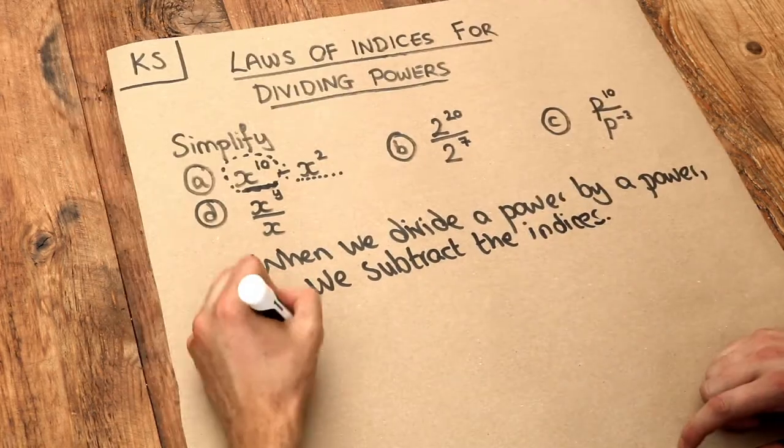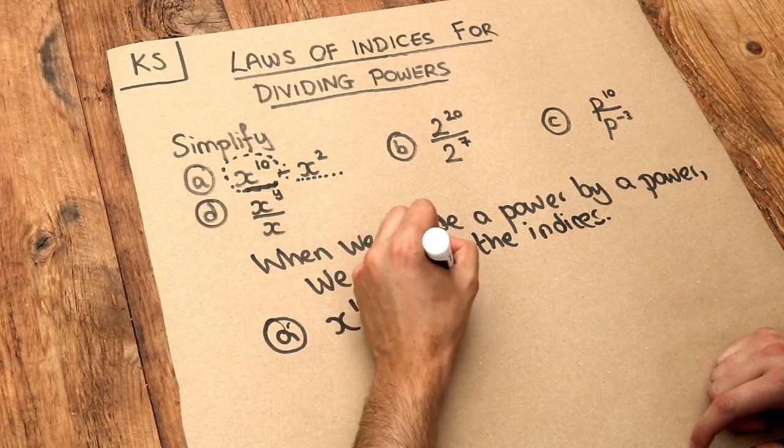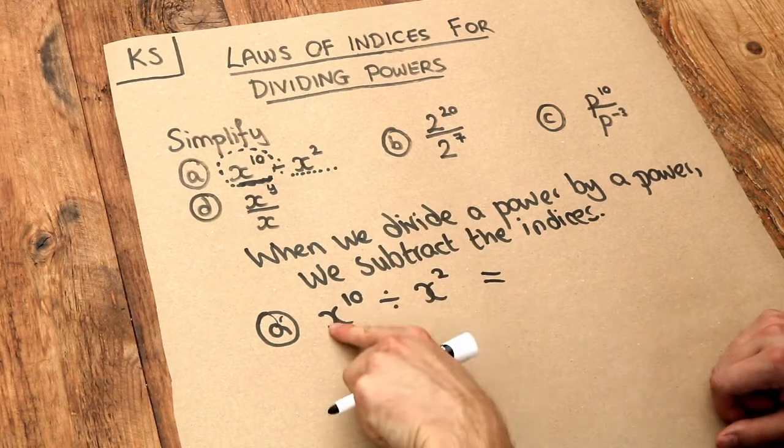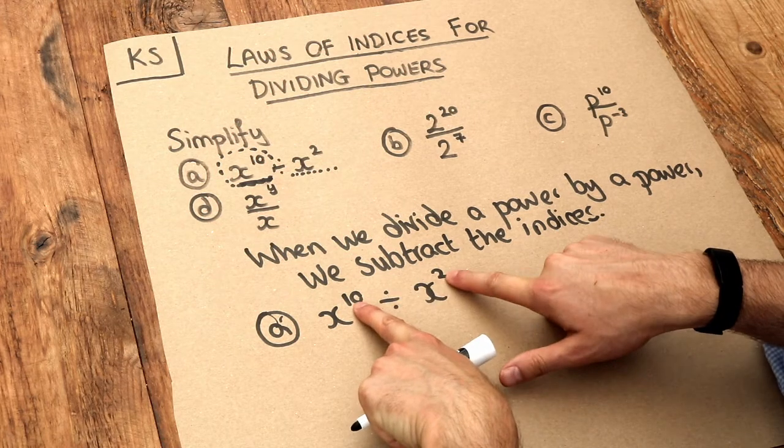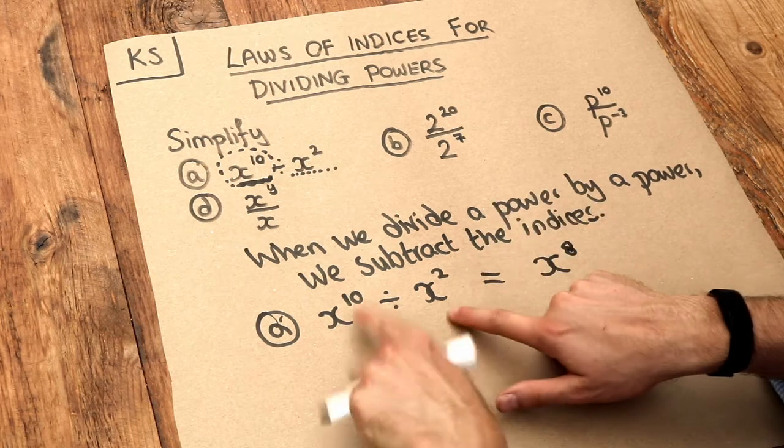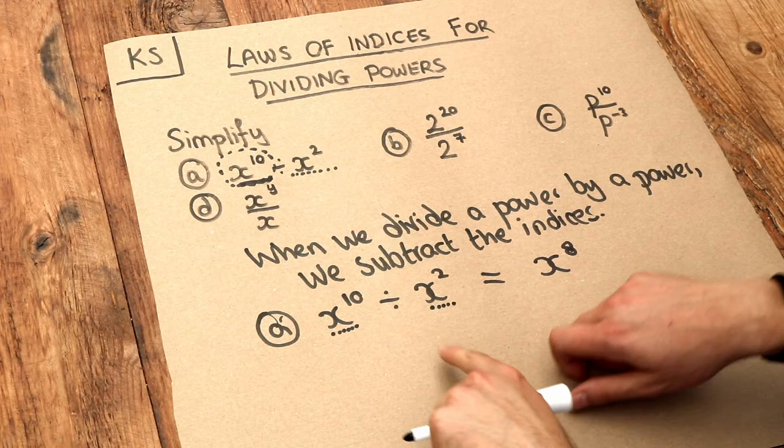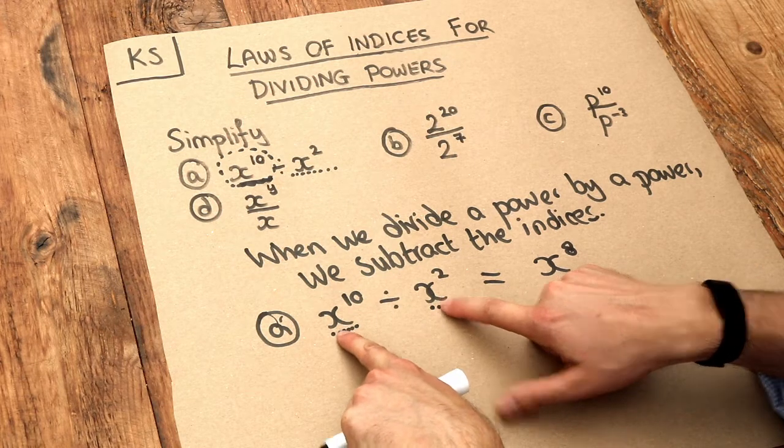For example a, when we do x to the 10 divided by x to the 2, we divide this power by this power and subtract the indices. 10 minus 2 is 8, so it'll be x to the power of 8. But we require that these two things, the x and the x, have to be the same. The bases have to be the same.